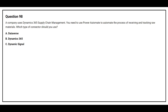Question number 98: A company uses Dynamics 365 Supply Chain Management. You need to use Power Automate to automate the process of receiving and tracking raw materials. Which type of connector should you use? Option A: Dataverse. Option B: Dynamics 365. Option C: Dynamic Signal. The correct answer is option A, Dataverse.